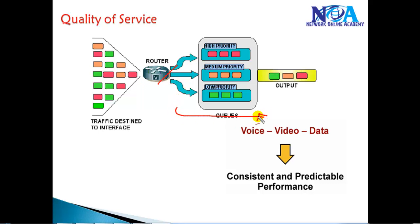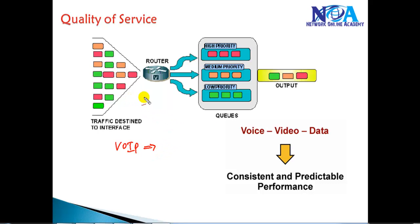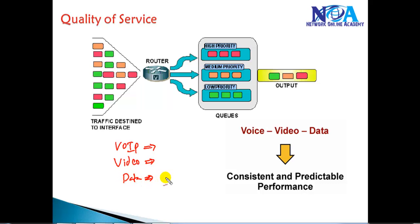In a network we normally have different types of traffic. You might be sending Voice over IP traffic, with IP phones connected, as well as video conferencing traffic. And there is also data traffic moving in the network — maybe HTTP traffic, FTP traffic, or database traffic.